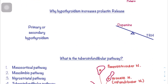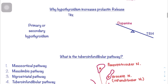Hypothyroidism increases prolactin release because TRH is the hormone that stimulates prolactin. In primary or secondary hypothyroidism, low T3 or T4 levels trigger negative feedback, causing increased TRH release. TRH stimulates thyroid cells to produce thyroxine, but it also stimulates prolactin production, so prolactin levels rise in this situation — TRH goes up while dopamine remains the same.